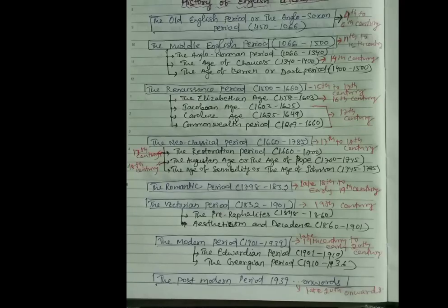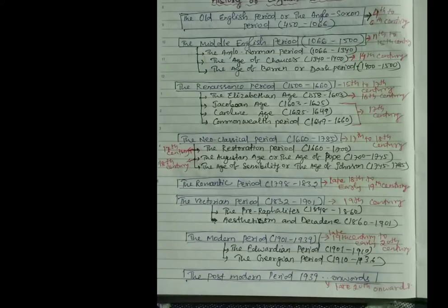Then the Renaissance period. It started from 1500 to 1660, and it is 15th to 17th century. You can find these ages, and Renaissance period divided into again four ages: Elizabethan age, Jacobian age, Caroline age, Commonwealth period. Here I have written again the timeline. This will be very helpful to you.